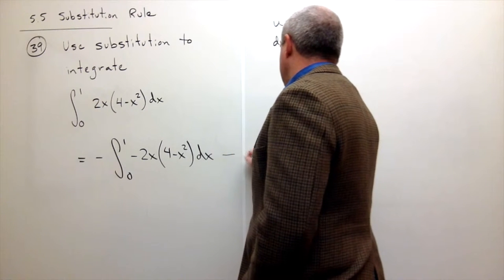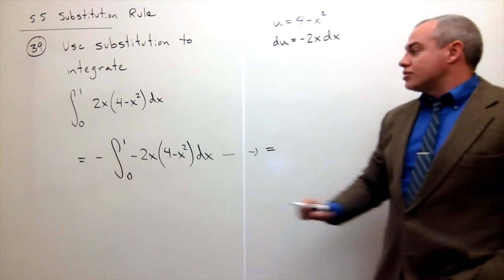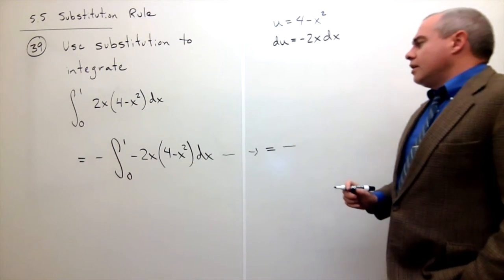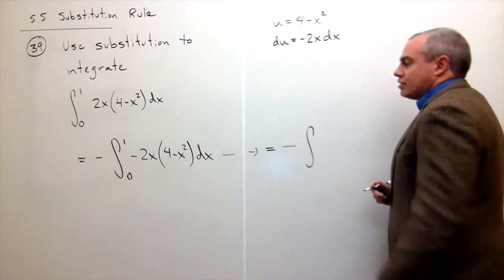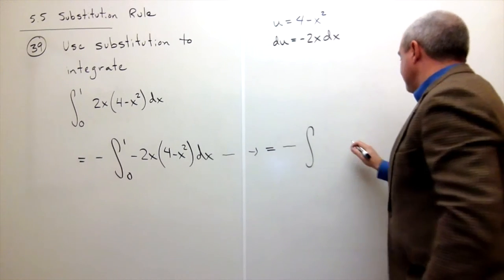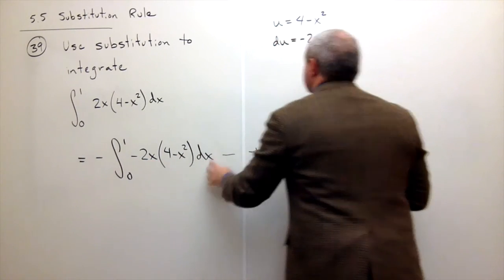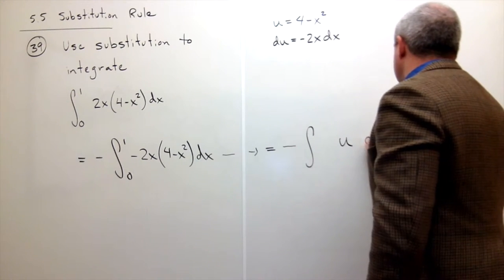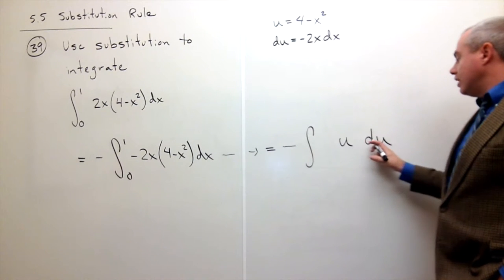Let's rewrite as an integral in u. My negative on the outside just hangs around. Then I get the integral of, now let's plug in my u's. This guy right here, 4 minus x squared, that is u. My negative 2x dx, that is du. So I just end up with integral of u du.